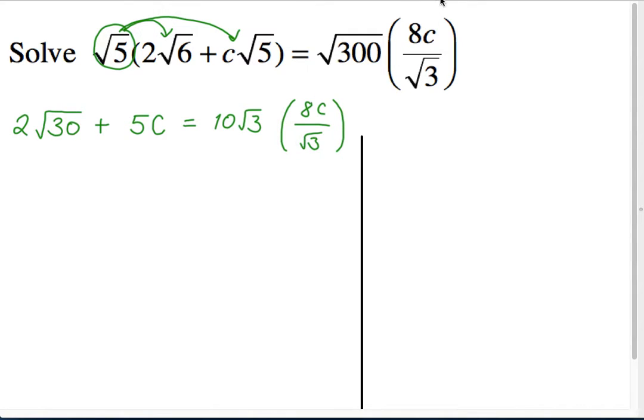However, on the right-hand side, it looks like we still have this fraction and we have a common part on the top, a common radical. A root 3 on the numerator and a root 3 on the denominator.